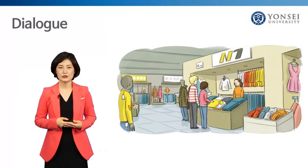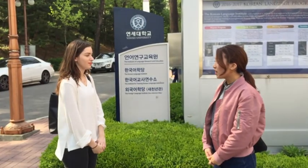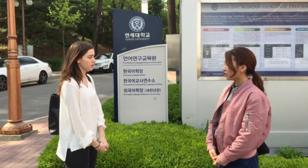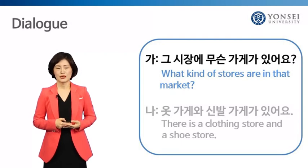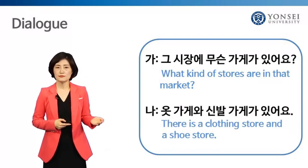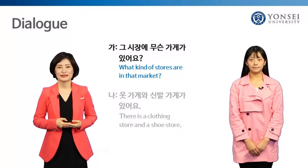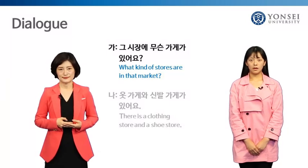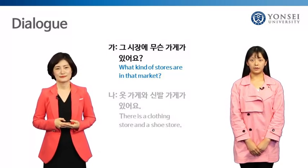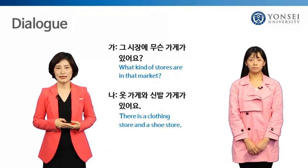Let's do some speaking practice using the expressions you have learned so far. Take a look at the dialogue. 그 시장에 무슨 가게가 있어요? 옷가게와 신발 가게가 있어요. What kind of stores are in the market? There is a clothing store and a shoe store. Now listen and repeat after me. 그 시장에 무슨 가게가 있어요? 옷가게와 신발 가게가 있어요.